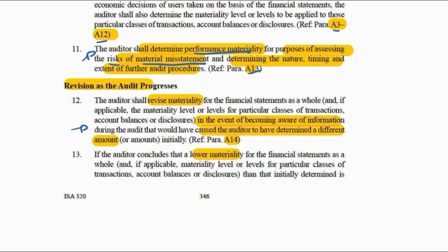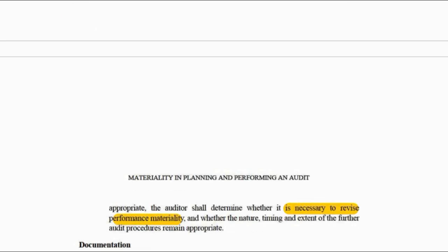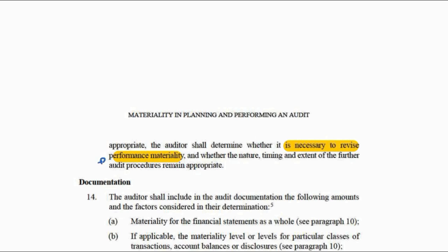Finally, materiality isn't fixed. If during the audit you believe your materiality figure is wrong, you can revise it based on evidence gathered. For example, if you initially assessed risks as low so your materiality was high, but you're now finding misstatements and realize risks are high, you might lower your materiality. If you lower planning materiality, you need to also consider lowering performance materiality. And that is ISA 320.